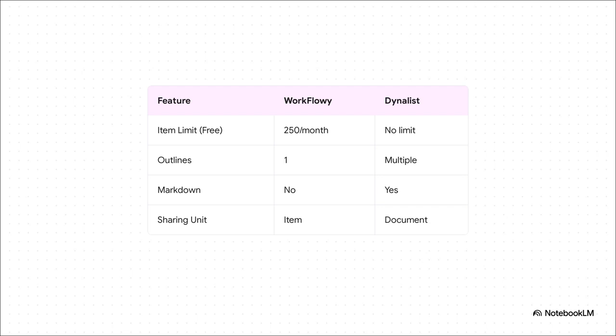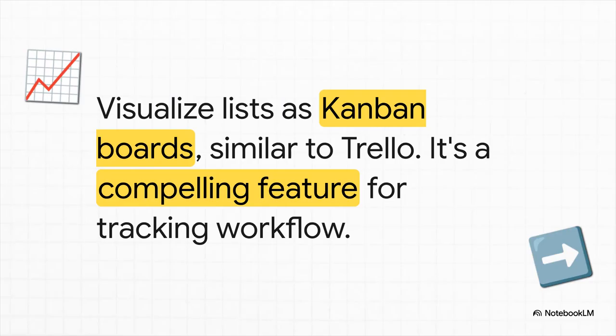Workflowy caps you at 250 new bullet points a month. And trust me, you can burn through that way faster than you think. Dynalist? No limit — it's unlimited. So if you plan on using this as your daily driver without opening your wallet, that's a massive point for Dynalist.